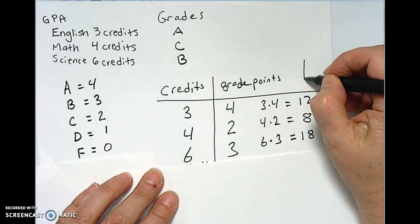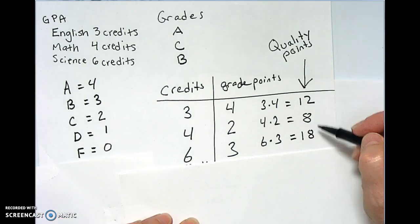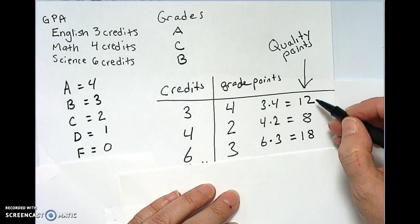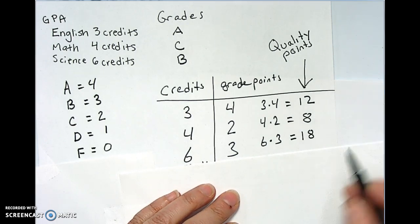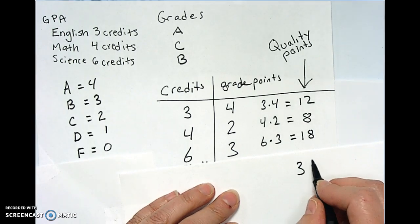So what these are called right here, they are called quality points. And what you do is you add up all of your quality points. 18 plus 12 is 30, plus 8 is 38. Am I right, Alejandra? Because you add better than me. Yes. Okay, good. 38.